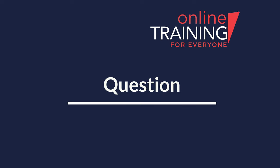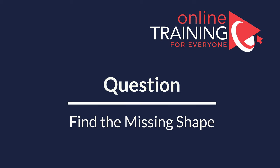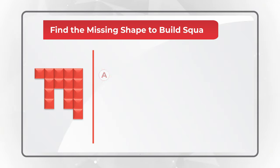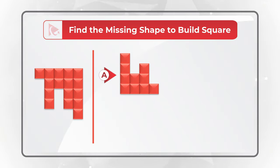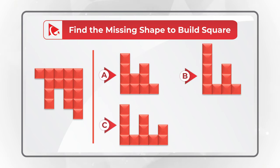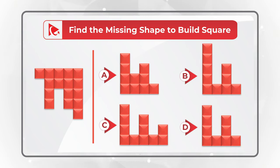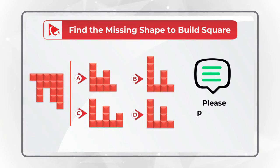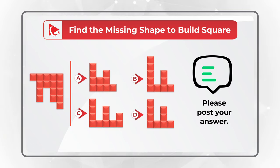And now here is a question for you to test your skills. You need to find the missing shape to build the square. You have four different choices: A, B, C, and D. Do you see the correct answer? Give yourself a little bit of time and when you're ready, please post your answer in comments. This would allow me to give you my feedback. Thanks for participating and good luck!